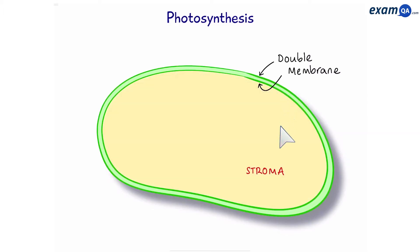Then, this gel-like substance in the middle is called the stroma. This is a thylakoid. A stack of thylakoids is called a granum, and many of them are grana.